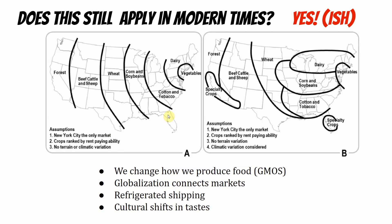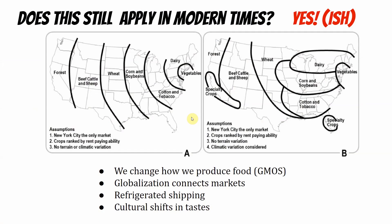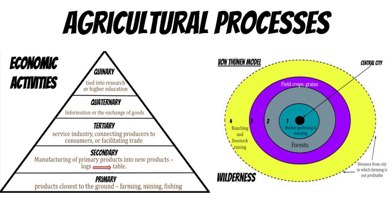Does the Von Thunen model still apply today? A perfect application would look like a neat bullseye, but it's not exactly applicable anymore. Because of globalization, refrigeration, and mass transportation, we don't have to follow the rigidity of this model. Back then it was wagons, horses, and foot travel. Today we have drones, trucks, and rail lines that can move everything — but a little bit of this model still applies. Hopefully this was helpful in learning about economic sectors — primary, secondary, tertiary, quaternary, and quinary — and the Von Thunen model.